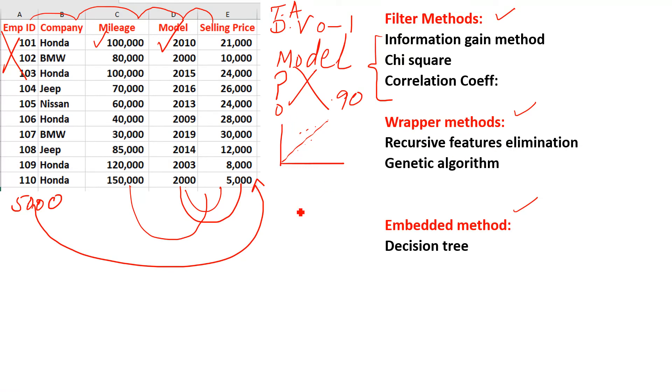The second method is called wrapper methods. In wrapper methods we have recursive feature elimination or genetic algorithm. I can pick employee ID and selling price—these two attributes I can give to my training set, and at the end we will receive some model. All this data is called the set, but if I pick this feature and this feature, this is called a subset. Now I pick employee ID and company, then add the selling price, which is the target attribute. Now I'm giving these three features to our training data set, and again I will get one model.